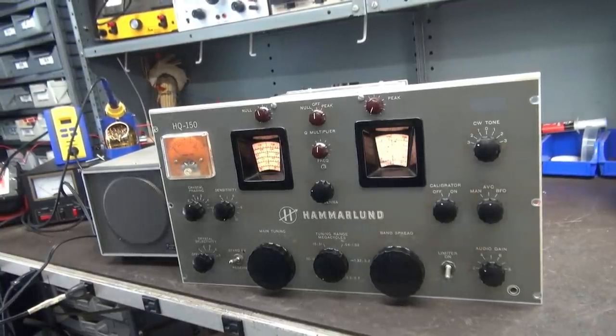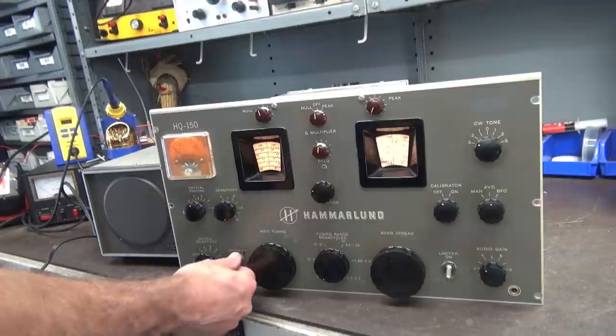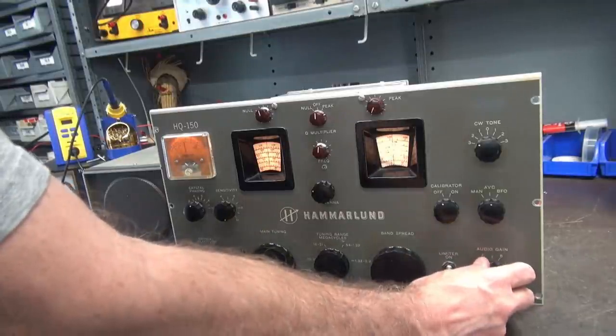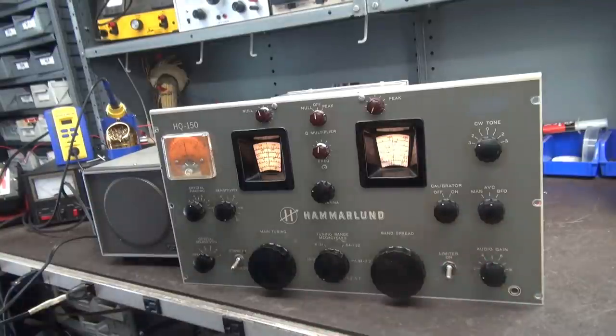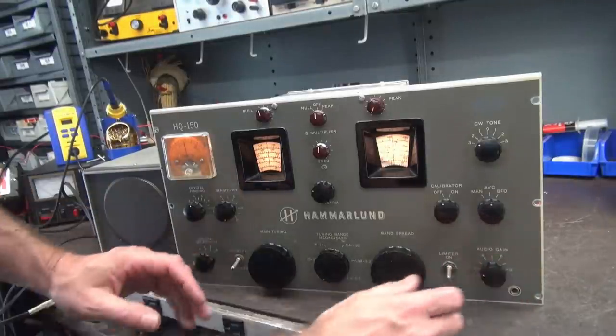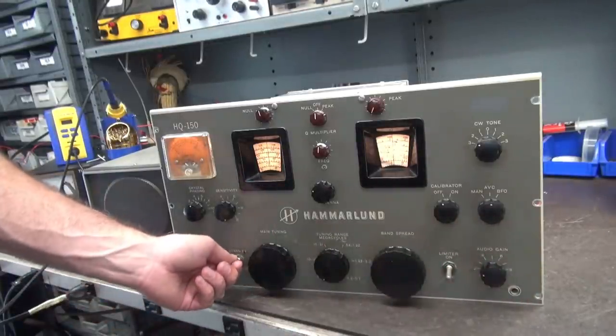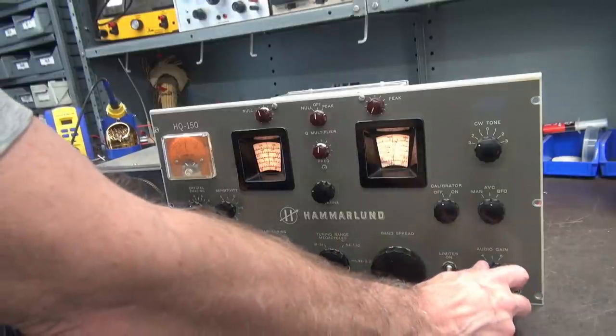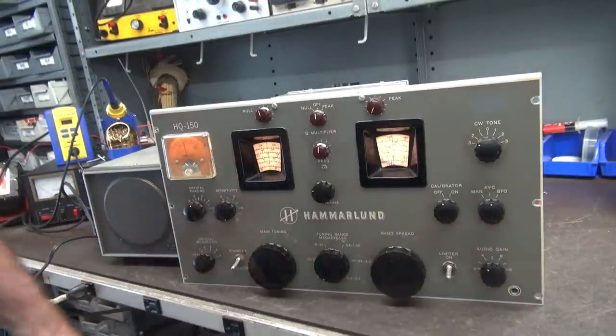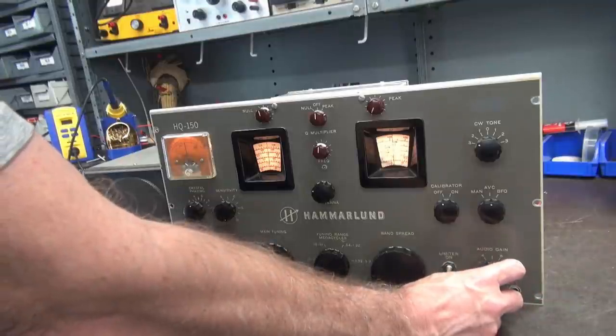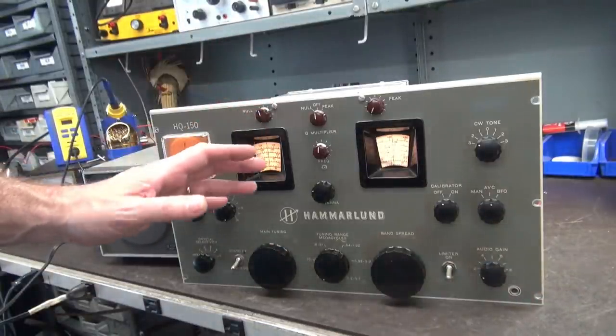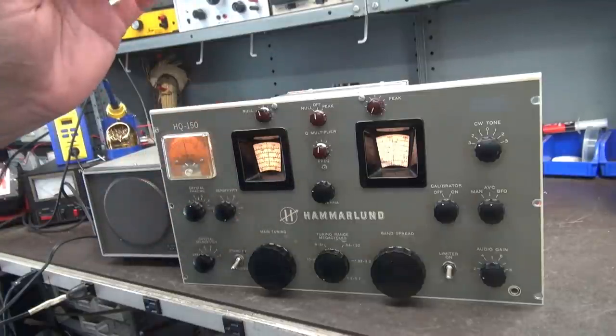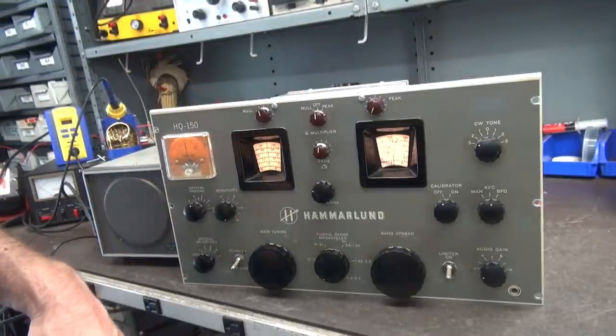All right, so let's first shoot it before and after. All right, so here is the HQ-150 with the standard standby system, okay? So if you had a TR switch, you'd be in transmit, and there's your receive. That might not seem so bad, but I guarantee you if you have contacts on your TR switch that are a little bit dirty, when you switch, it'll go kabam.